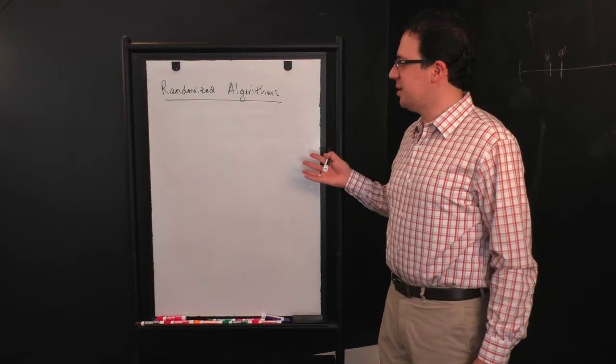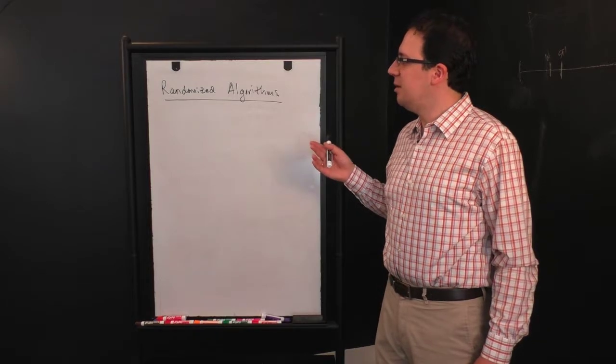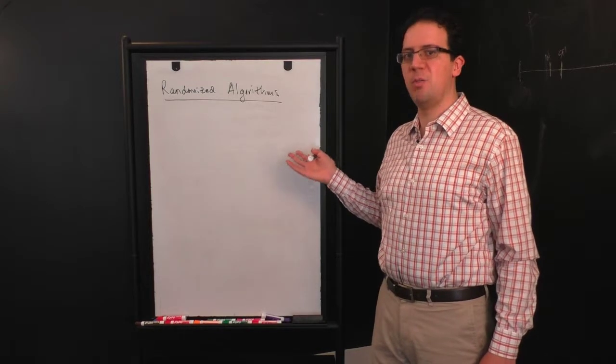All right, so we've seen a couple examples of randomized algorithms and how they can be very simple and very efficient, but where does randomness really come from in a computer?